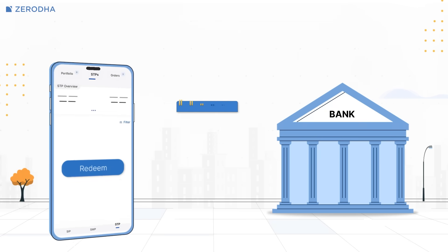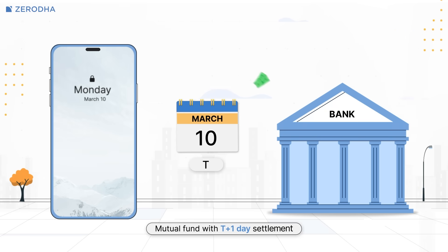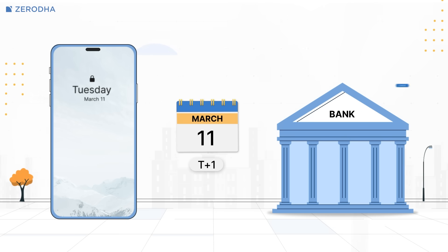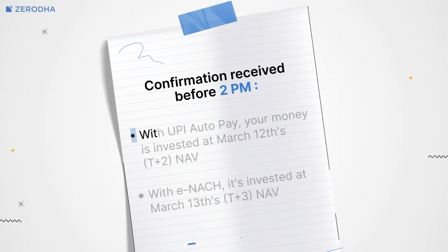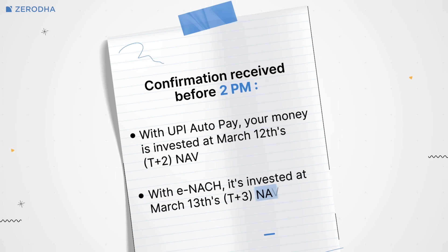Here's how the timeline works for your STP. Let's say your redemption order is triggered on March 10th. Assuming a one-day redemption timeline, it reaches your bank account on March 11th. Once the amount is credited, the exchange sends a confirmation to the broker. If the confirmation is received before 2pm, with UPI AutoPay your money is invested at March 12th's NAV. With E-NACH, it's invested at March 13th's NAV.